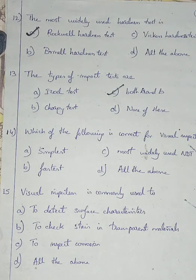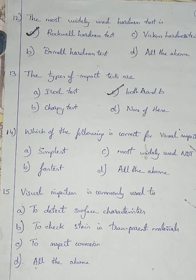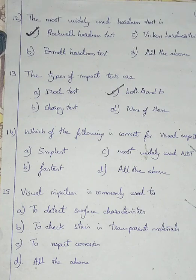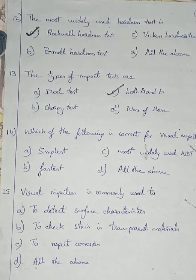Question number 14. Which of the following is correct for visual inspection? Option A: simplest process. Option B: fastest. Option C: widely used. Option D: all the above. Visual inspection is the simplest because we just observe and note readings. It is fastest because we can quickly note dimensions and move on. It is the most widely used NDT method. So I am going with option D, all the above.